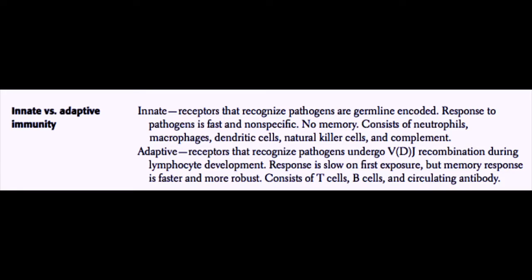For the adaptive response, the receptors that recognize pathogens undergo hypervariability through VDJ recombination during lymphocyte development, so you have very specific receptors. The response is slow on first exposure because we have to go through proliferation steps, but the memory response is much faster and more robust. The adaptive response consists of T cells, B cells, and circulating antibody — slow with the primary response, much faster with the secondary response, specific to a certain antigen.